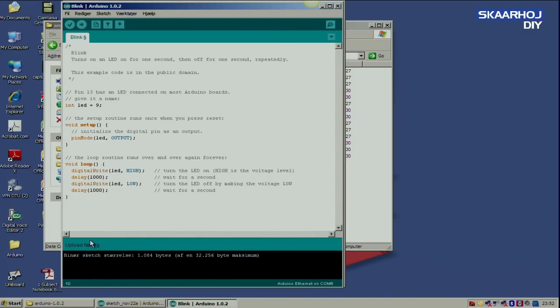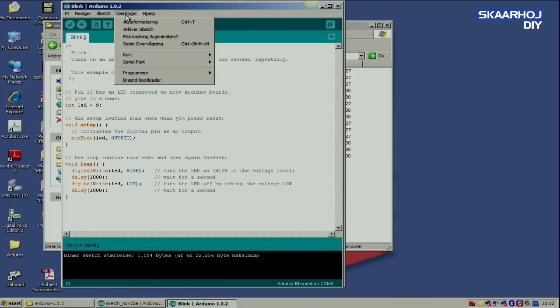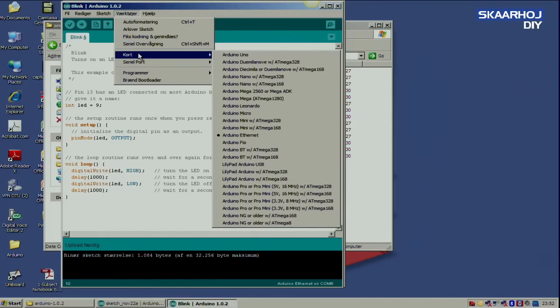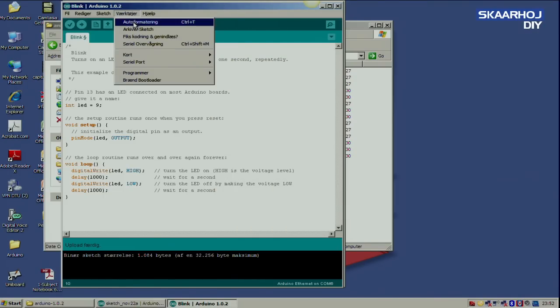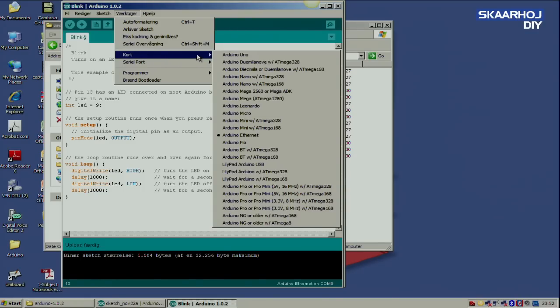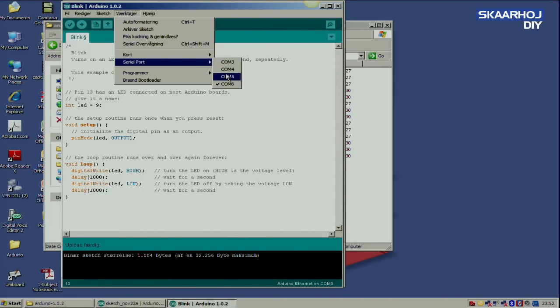The reason why this went totally smooth is because the application already knew that we had an Arduino Ethernet board and the COM port 6. And these two things were told by us to the application. As you can see from the tools menu, the board menu, and then the Arduino Ethernet is selected. And under serial ports, you can see that COM 6 is selected.